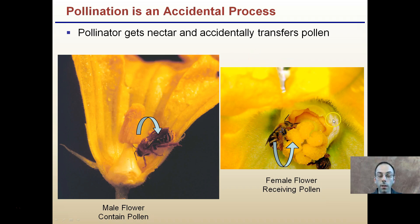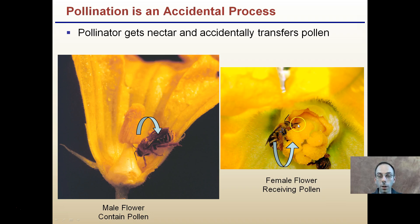The bee flies out of this flower — a male flower — and into a female flower. This is a squash plant that produces both, which is why I chose it to show this distinctively. Here's the bee going back down to get the nectar, and now it's taking the pollen acquired from the male flower and transferring it to the stigma here. That's why you typically see bees in these flowers with their heads down trying to absorb the nectar — they're not concerned with the pollen transfer, it's simply an accidental process.